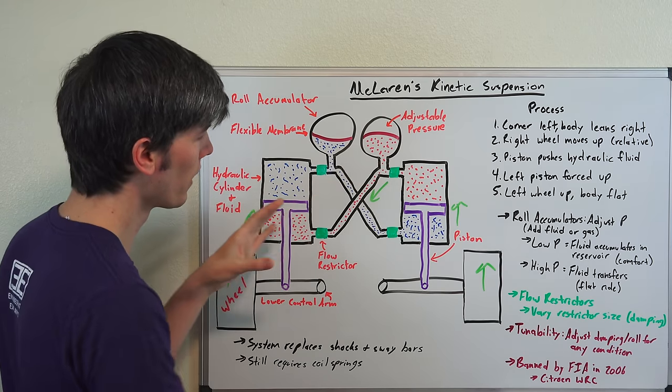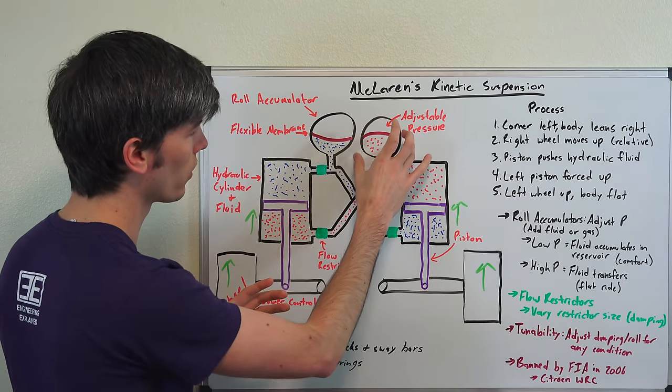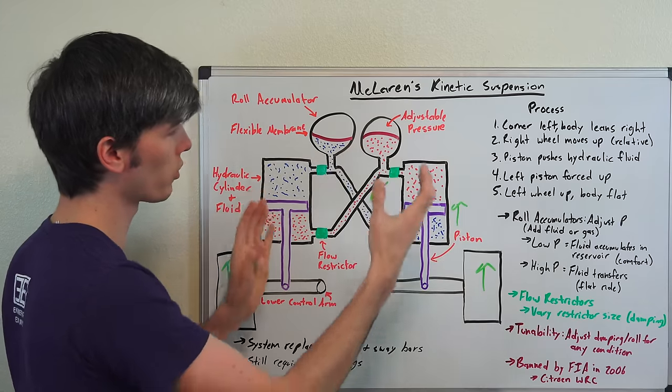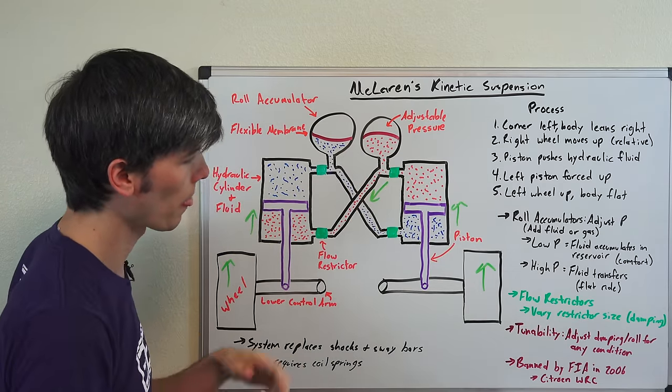Now if you have it really stiff, that's where it's going to be kind of counteracting that roll. And so you can adjust the roll, how much roll you're going to have by adjusting the pressure in these roll accumulators.